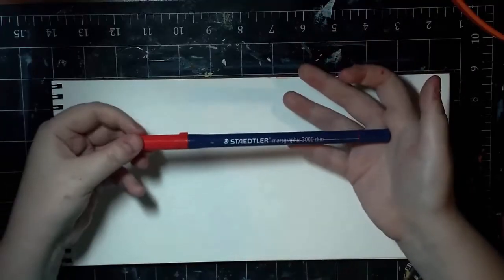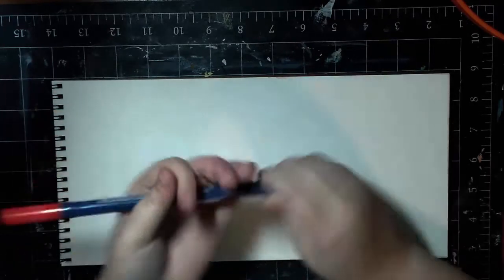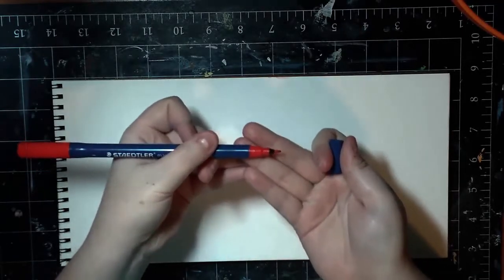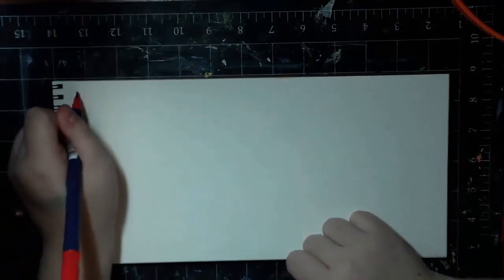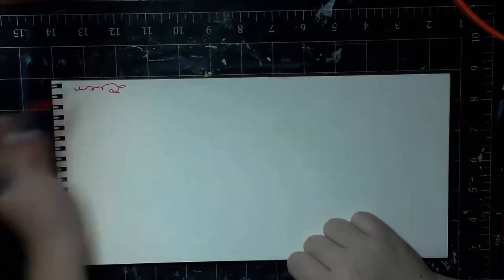So as I showed you before, here is the barrel, and I'm gonna be showing you how the different tips write. So for the small tip, I don't know if you can see that, but for the small tip, this one right, it's just kind of normal. It's got a thin line, or thinner than the brush tip. I'm just making random doodles.